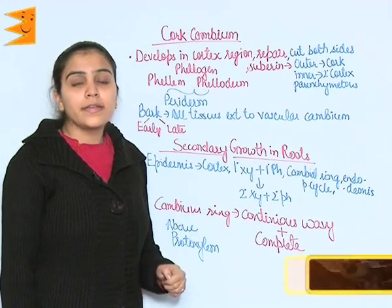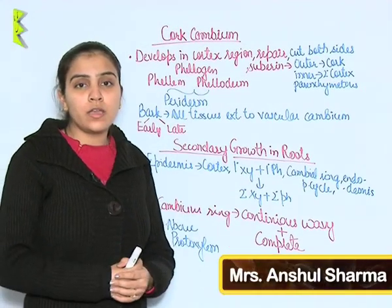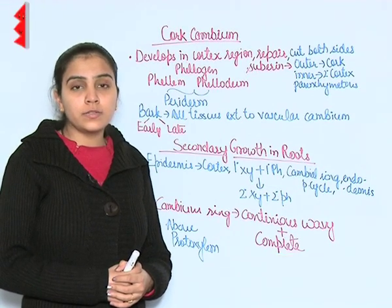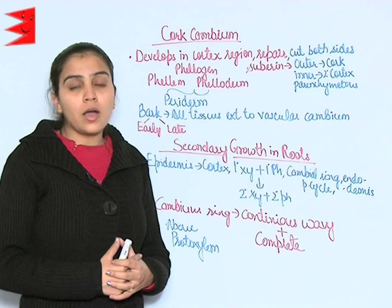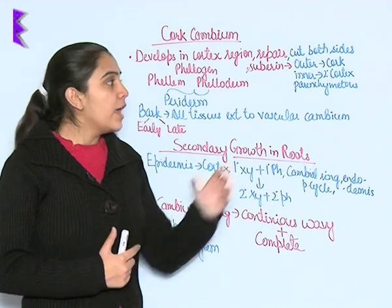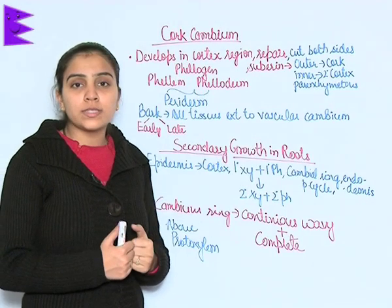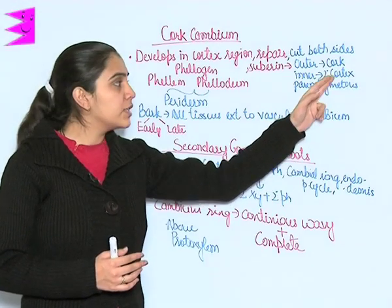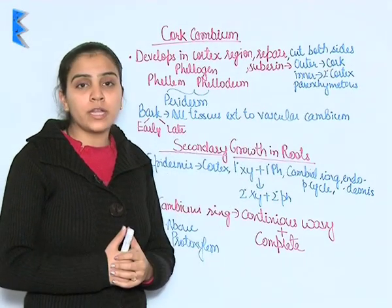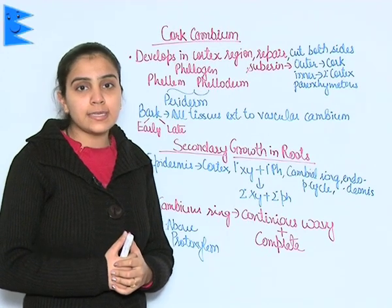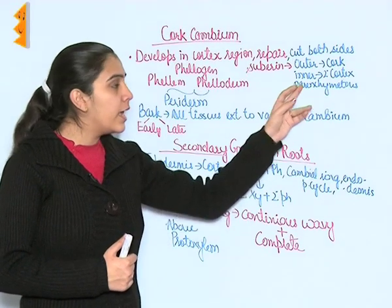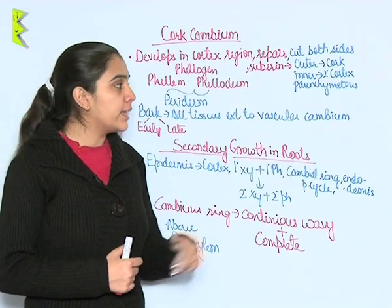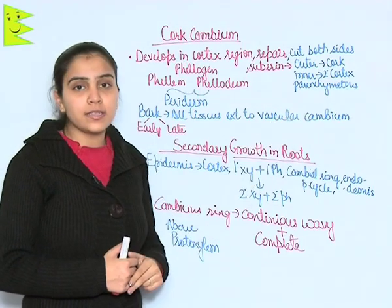Cork cambium is responsible for the repair of outer layers of the tree, because when girth shows secondary growth, outer layers are broken. It cuts on both sides. If it is cutting towards the inner side, it forms cork which is coated by suberin and hence is impermeable to water. If it cuts on the inner side, it forms secondary cortex which is parenchymatous in nature.